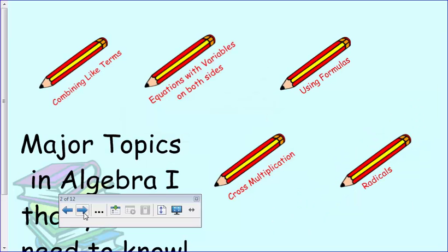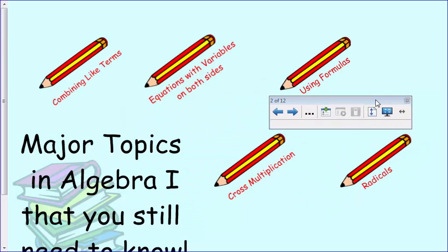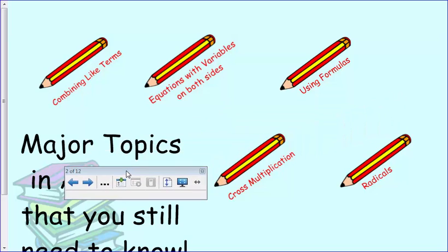There are a couple major topics in Algebra 1 that you still need to know in order to do geometry. You need to know how to simplify by combining like terms, you need to know how to solve equations, one step, two step, multi step, variables on both sides,